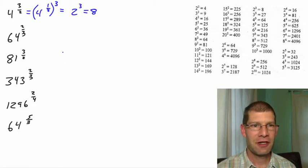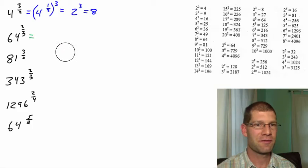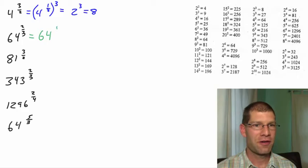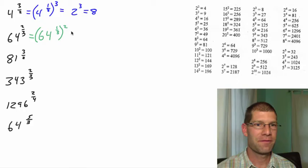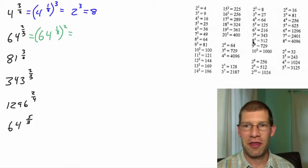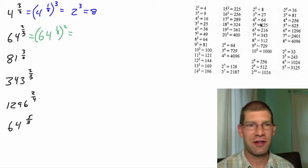Next I have 64 to the 2 thirds. You could say that's the same as 64 to the 1 third, then that's going to be squared. Since we're doing the cubed root first, the third root, we jump over to our third power column. We say what to the third is 64? And that's going to be a 4. So then we have 4 squared. And if you don't know that one, you fly over to your squared column. You see 4 squared is 16.